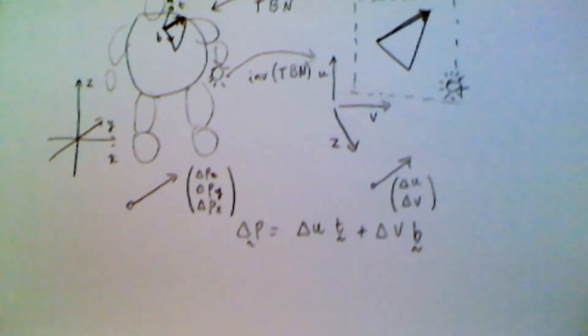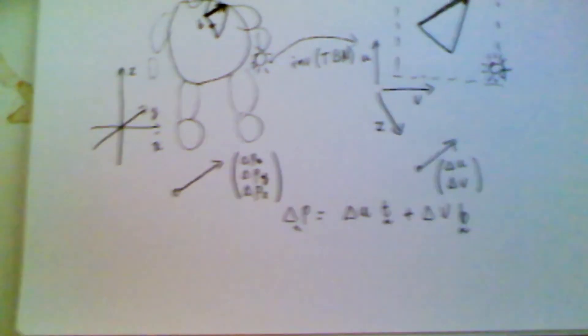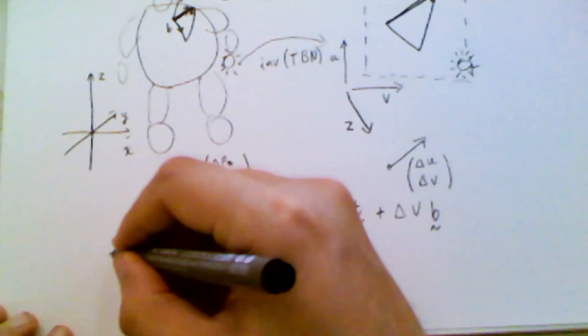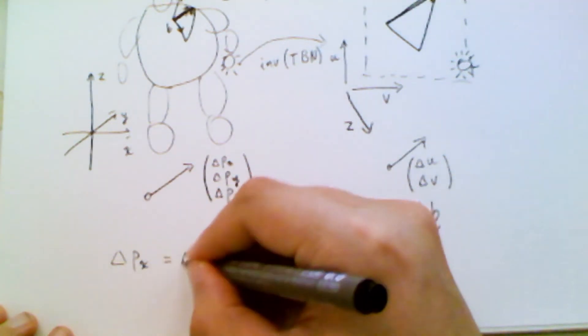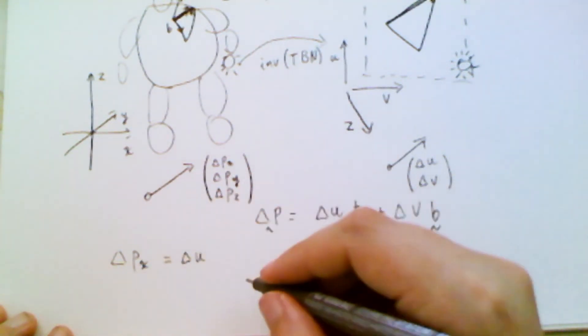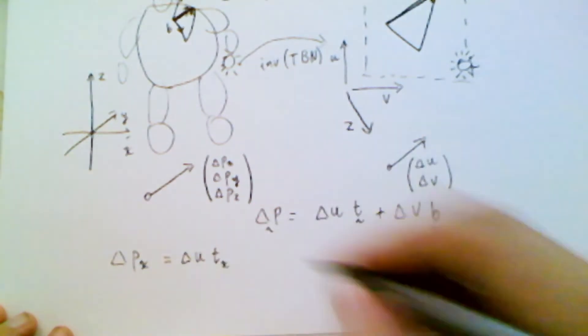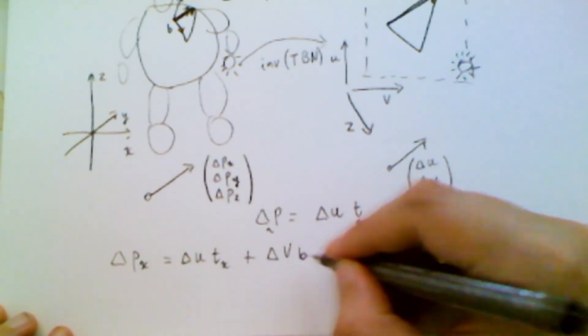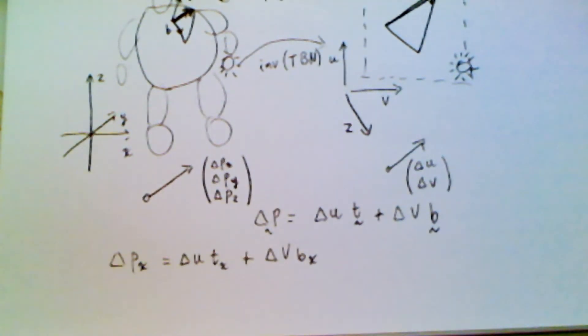So if I broke this down further into components, then we could say something like, okay, the change in X. So we go change in position. Its X component is, again, U and V are just parameters. So change in parameter, change in U times the X component of the tangent plus change in V times the X component of the bitangent, and so on. And you can see that we could extend this to Y and Z in exactly the same way.